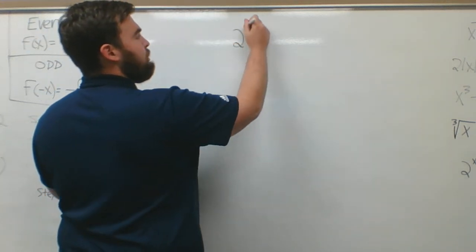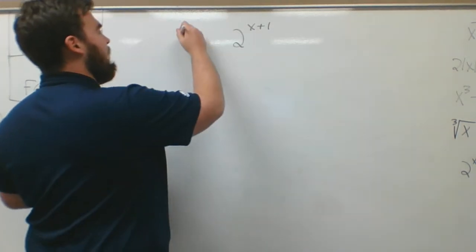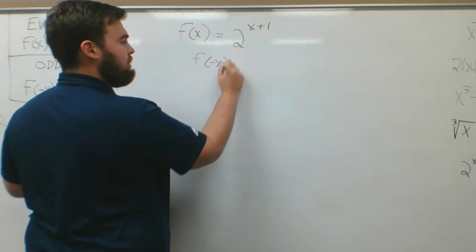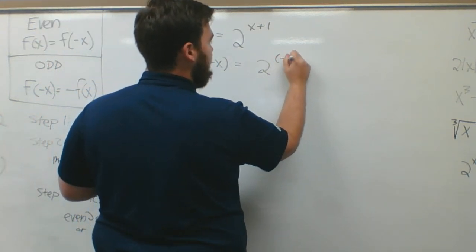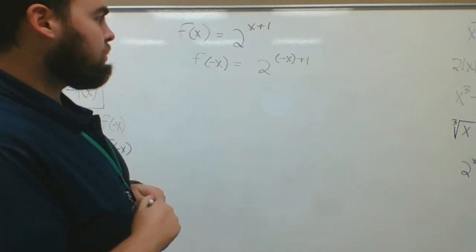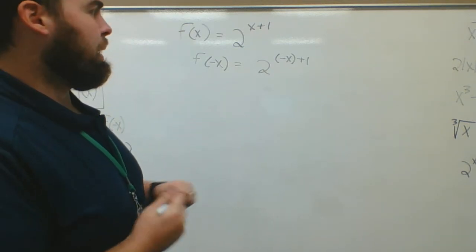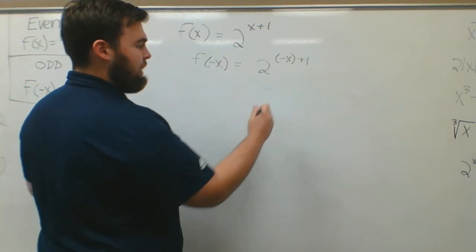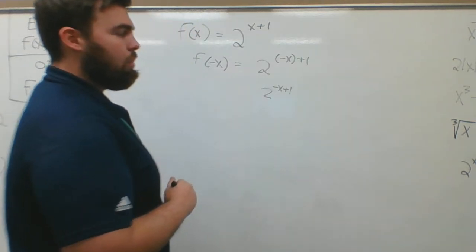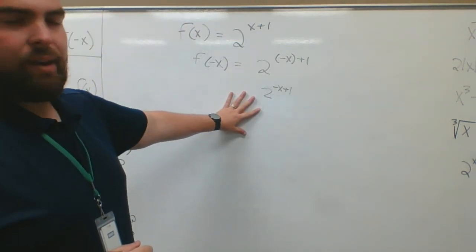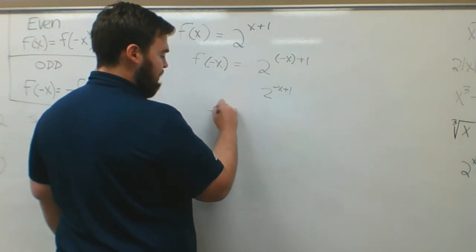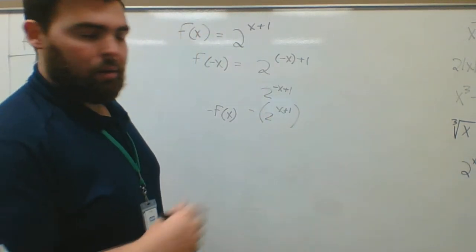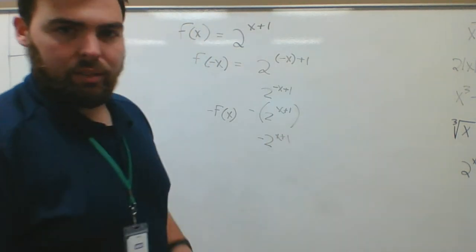Last example: f of x equals 2 to the x plus 1. This is an exponential function, meaning there's an exponent that's a variable. Finding f of negative x: I get 2 to the parentheses negative x plus 1, which is 2 to the negative x plus 1. That doesn't match f of x, so it's not even. Then I check negative f of x: I take the original 2 to the x plus 1 in parentheses and put a negative in front, giving negative 2 to the x plus 1. This doesn't match f of negative x either, so this would be neither.